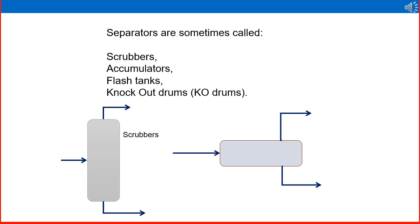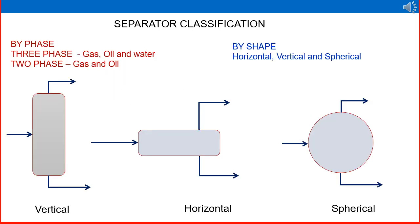Separators are known by different names in various operations: scrubbers, accumulators, flash tanks, and knock-out drums. For separator classification, look at the figure — separators can be vertical, horizontal, or spherical, depending on pressure or the volume of gas or oil.